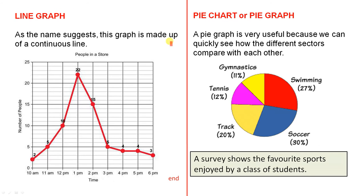The line graph. As the name suggests, this graph is made up of a continuous line. So with this one for example...